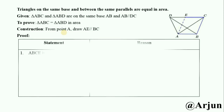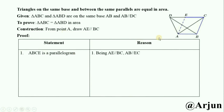Now we can start the proof with a table of statements and reasons. Statement number 1: ABCE is a parallelogram, because AB and DC are parallel, and AE and BC are parallel — opposite sides are parallel.